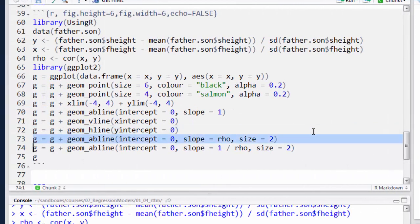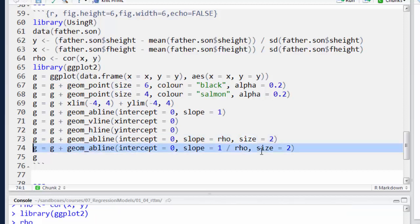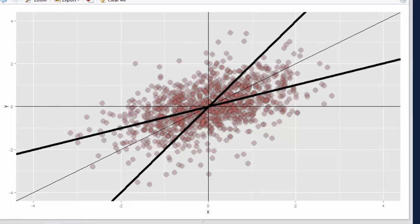And now I'm going to create the line where I treat the son's height as the outcome and the father's height as the predictor. And I'm going to add the line now where I treat the son's height as the predictor and the father's height as the outcome. Of course, the axes are rotated as I discussed on the previous slide. And so I need the slope to be 1 over rho. Now let me get the plot. I've created the two fitted lines. I've doubled the width of the fitted lines. So next, let's just talk about regression to the mean as it relates to this plot.